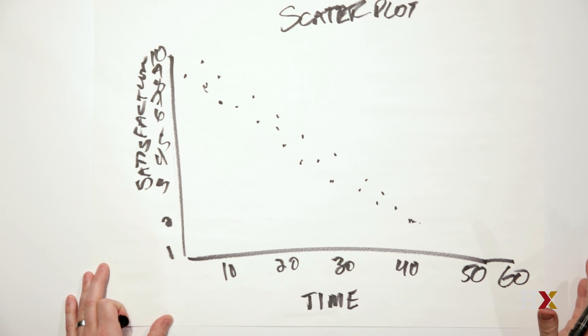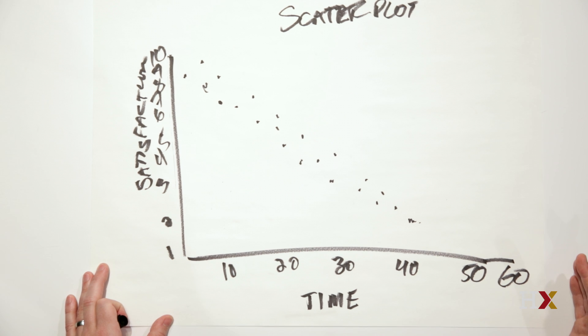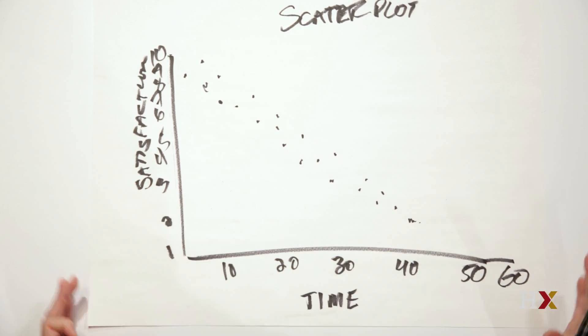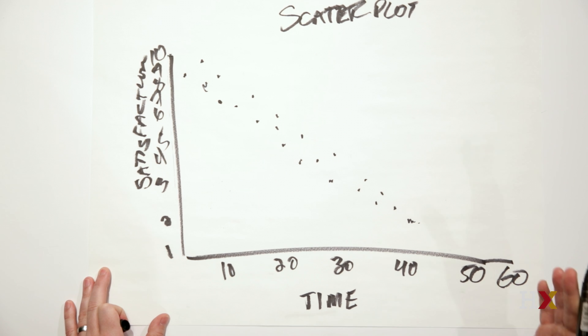So if satisfaction scores increased as time increased, we would have a positive correlation. If the dots are randomly displayed like a shotgun blast, we'd say there's no correlation.